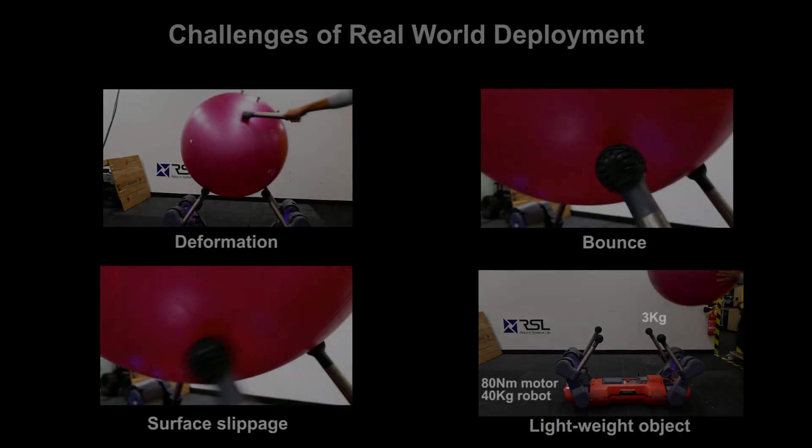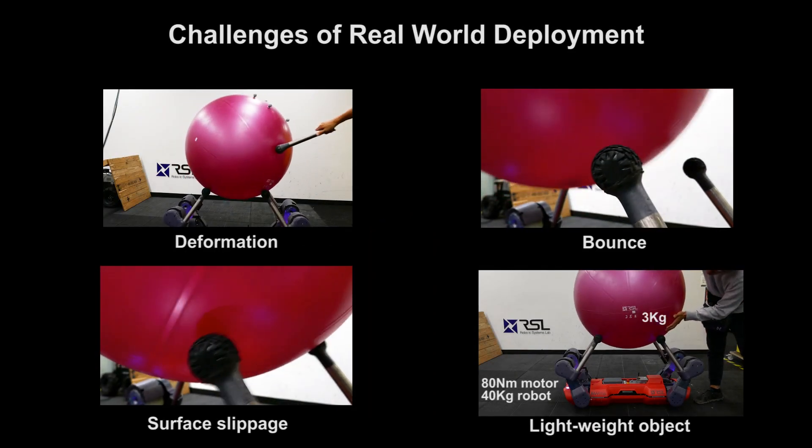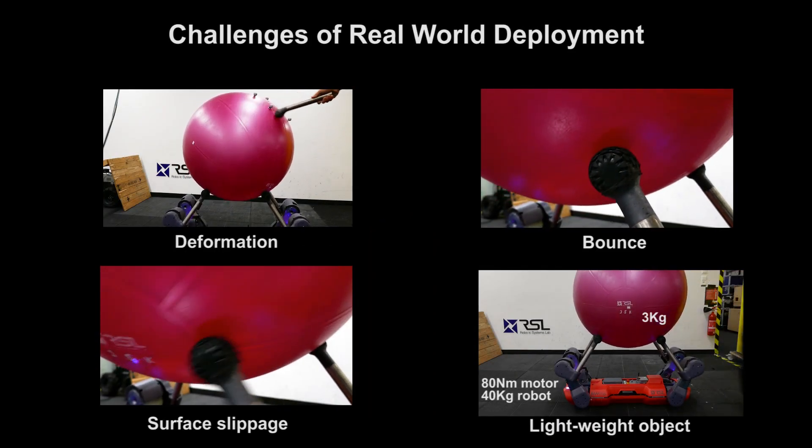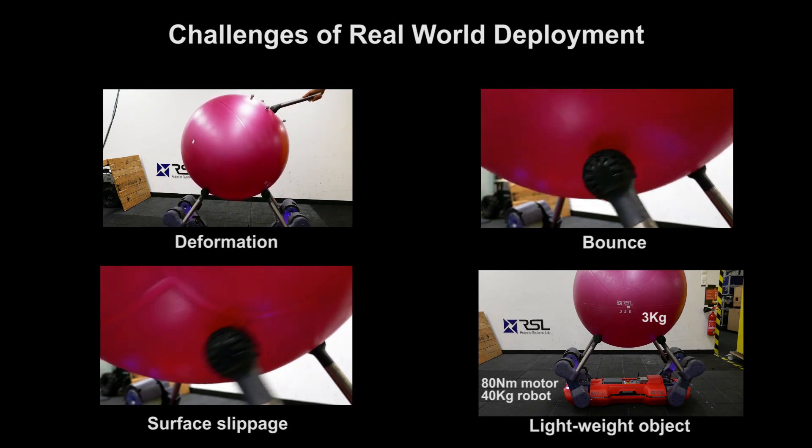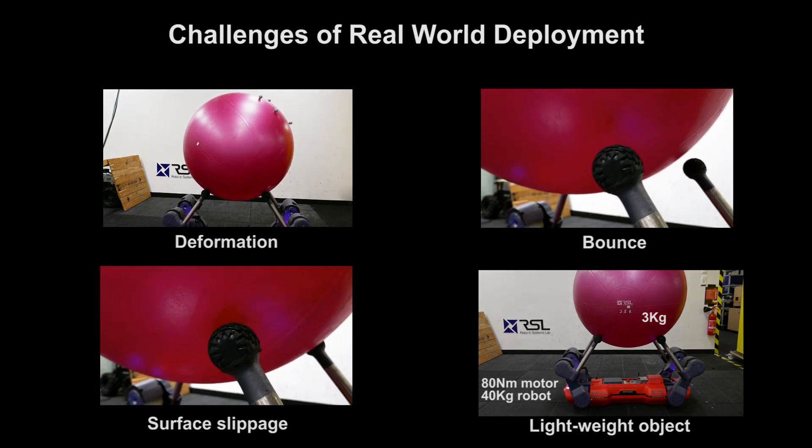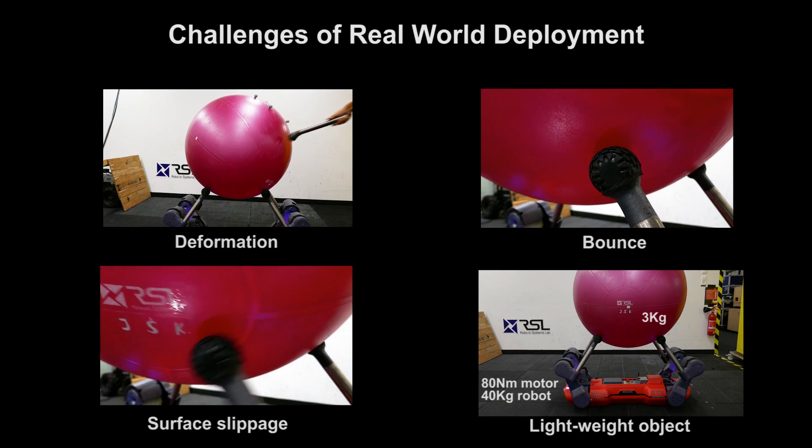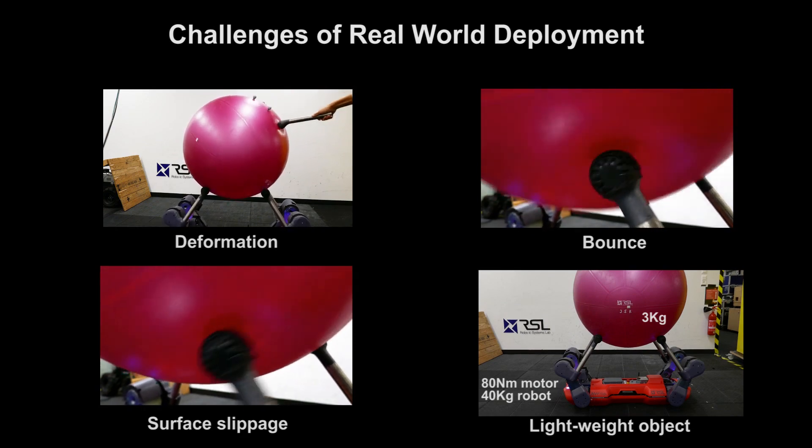One of the main challenges is to deal with modeling mismatches between the simulation and the real-world setup. The small weight of the ball compared to the robot's body weight requires careful manipulation to avoid excessive bouncing and potential loss of control.